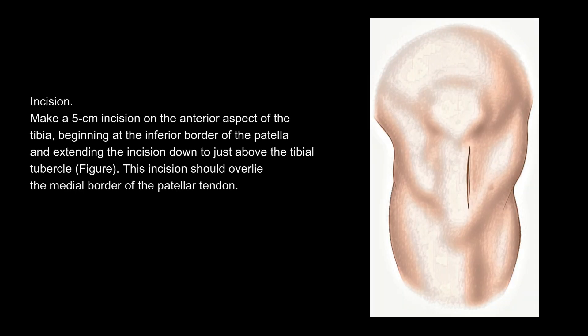Incision: make a 5 cm incision on the anterior aspect of the tibia, beginning at the inferior border of the patella and extending the incision down to just above the tibial tubercle. This incision should overlie the medial border of the patella tendon.